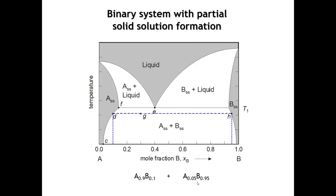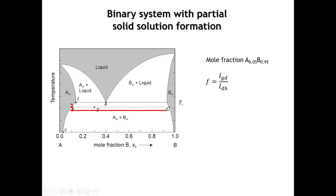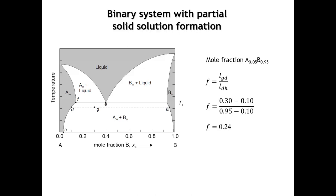Using the lever rule to find the ratio of these two phases — specifically the mole fraction of the phase rich in B encountered at point H — the fraction is the length of segment GD divided by the length of the entire segment DH. Plugging in the numbers gives a phase fraction of 24%, so the sample is 24% of the phase rich in B (95% B, 5% A) and 76% of the phase rich in A.